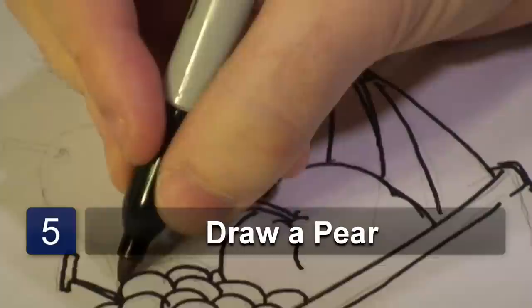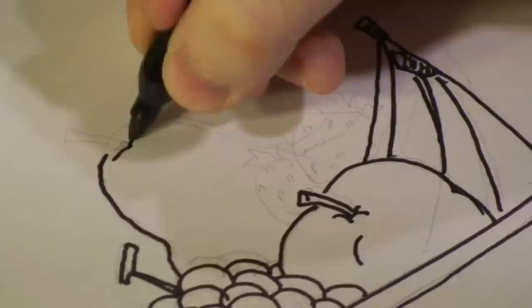Okay, finally, let's add us a pear. Another stem on top, and we're going to draw a little angular thing right there.